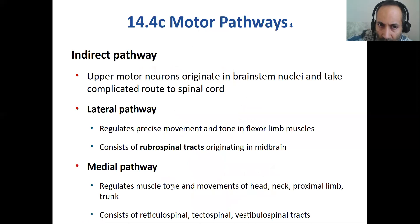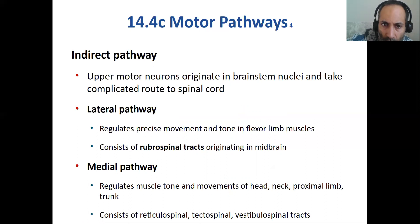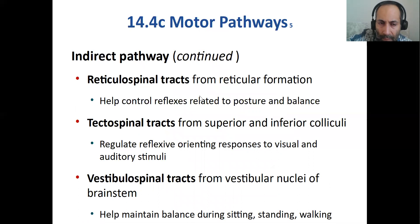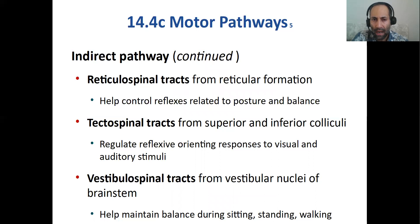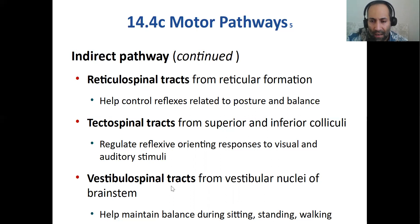The upper motor neuron is in the brain itself, and the lower motor neuron is between the spinal cord and the muscle. These indirect pathways have upper motor neurons originating in the brainstem taking a complicated route to the spinal cord. Examples include the reticulospinal tract controlling reflexes related to posture and balance, the tectospinal tract for visually or auditorily tracking objects, and the vestibulospinal tract useful during sitting, standing, and walking for muscle tone.